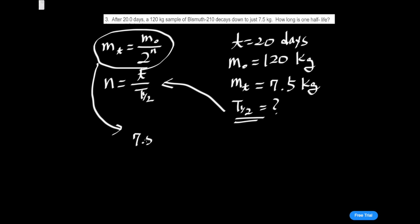7.5 is equal to 120 over 2 to the n. So, switch it, multiply by 2^n on both sides, and divide by 7.5, which gives 2^n equals 120 over 7.5. Let me see. That should equal 16.